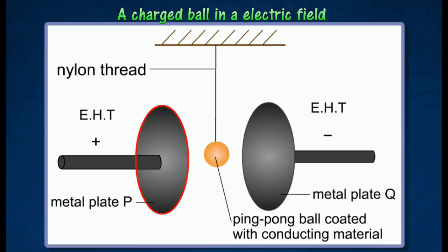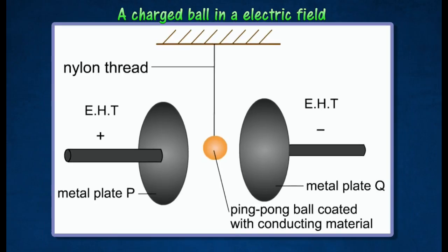The metal plate P is connected to the positive terminal of an extra high tension power supply. The metal plate Q is connected to the negative terminal of the extra high tension power supply. A ping pong ball coated with conducting material is hung in the space between the two plates.